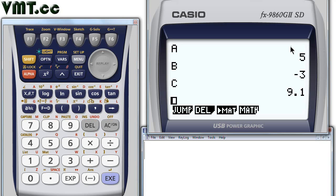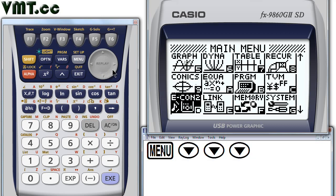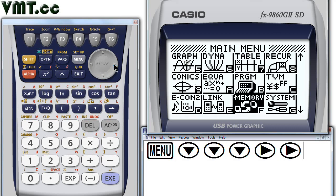If you want to clear the values of multiple variables all at once, you can do the following. First, press menu, then use the arrow keys to highlight the memory manager icon. Press execute.